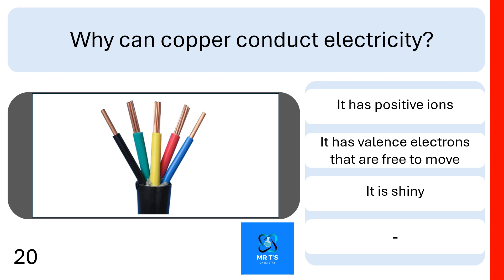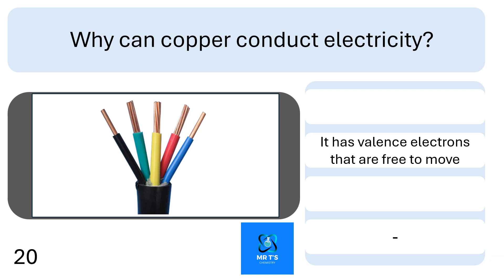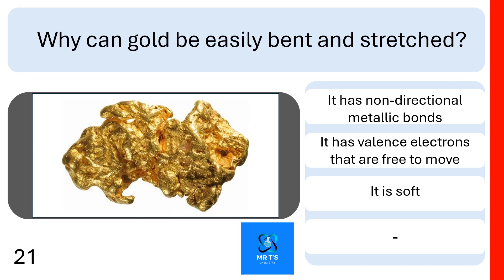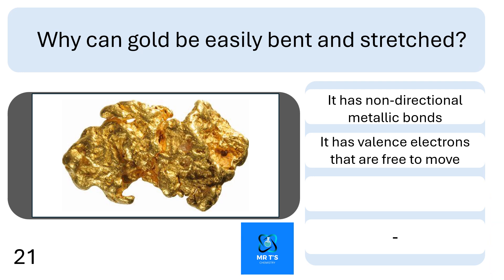Question 20. Why can copper conduct electricity? There may be more than one correct answer here. It has positive ions. It has valence electrons that are free to move. If it is shiny. You are correct if you identified that it has valence electrons that are free to move. Why can gold be easily bent and stretched? Again, there may be more than one correct answer. The two correct reasons are it has non-directional metallic bonds and its valence electrons are free to move.